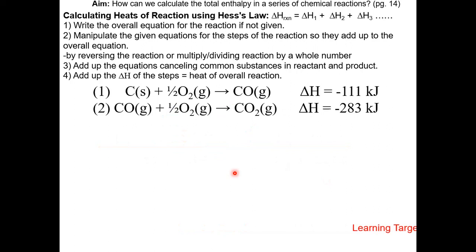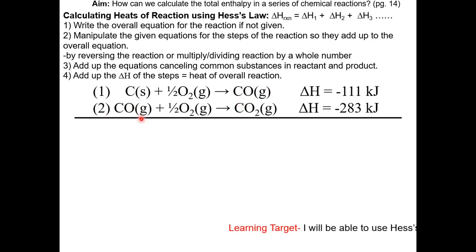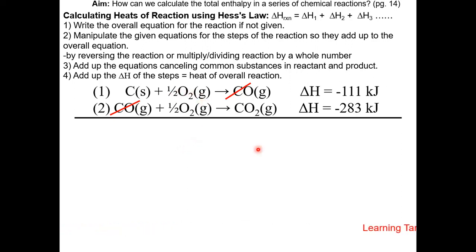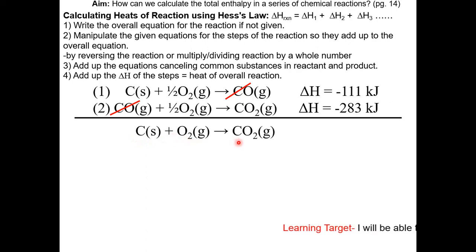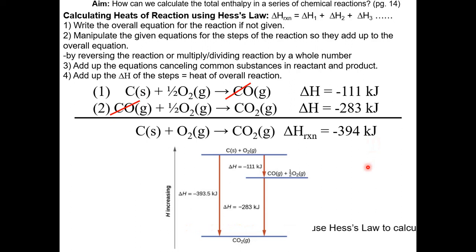Let's look at another example. Here we're given two steps and their delta H. To get the heat of reaction, we combine these two steps to get the overall equation. We must cancel out common substances: CO gas appears on both the reactant and product side, so we cancel it out. Notice that both equations have 1/2 O2 on the reactant side, so when combined that becomes 1 O2. The overall equation is C plus O2 giving us CO2. The heat of reaction is negative 394 kilojoules. Here's a diagram to illustrate these calculations.